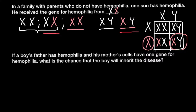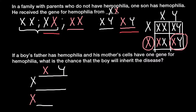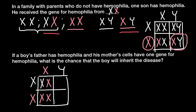Let's build a Punnett square. The mother's genotype goes on the side and the father's genotype on the top. From this cross we can predict the outcomes: 50% of the daughters would be carriers and 50% of the daughters would be affected.